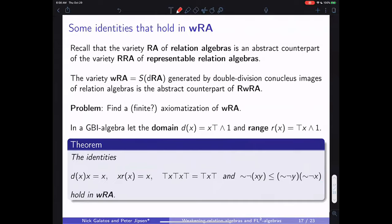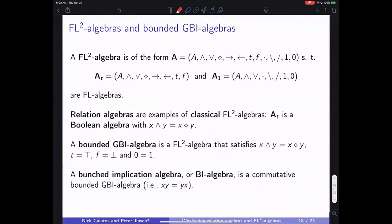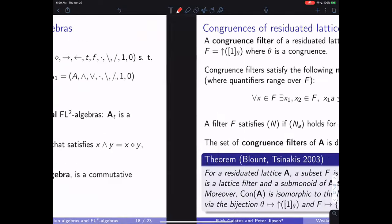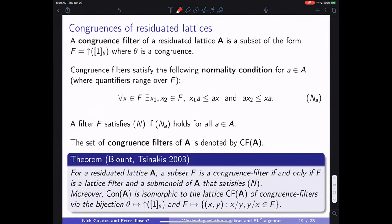This class was defined abstractly rather than by equations — so does it have a finite axiomatization? We have three equations that must hold, as shown in the proceedings paper. The final part, which I'll gloss over, is the main part of the paper: FL² algebras have a nice congruence structure, almost as nice as for FL algebras. For relation algebras, a key result due to Blount and Tsinakis makes the theory algebraically manageable.